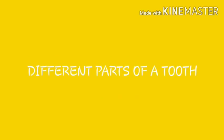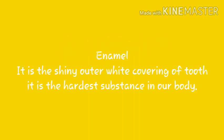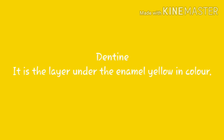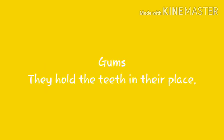The different parts of a tooth are enamel, dentine, pulp, and gums. Enamel is the shiny outer white covering of a tooth — it is the hardest substance in our body. Dentine is the layer under the enamel, yellow in color. Pulp is the part under the dentine and is the softest part of a tooth. Gums hold the teeth in their place.